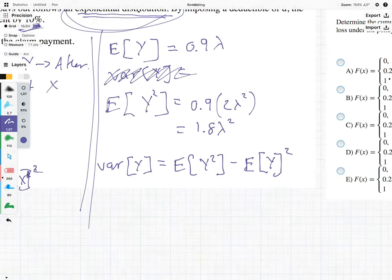Which means we have 1.8 Lambda squared minus 0.9 Lambda squared, because we're getting it from over there. And this is going to be equal to 0.99 Lambda squared.